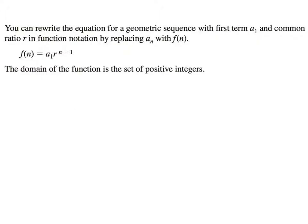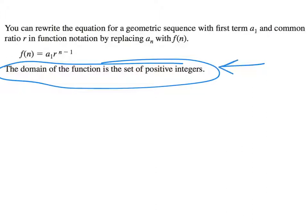If we write it as a function, instead of a-sub-n we write f of n. You can rewrite the equation for geometric sequences in function notation. The domain of the function is the set of all positive integers — this will never change — because positions are whole numbers 1, 2, 3, 4, 5, with no decimals or negatives.